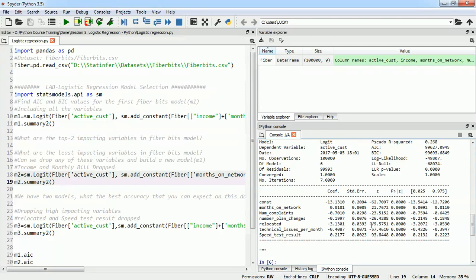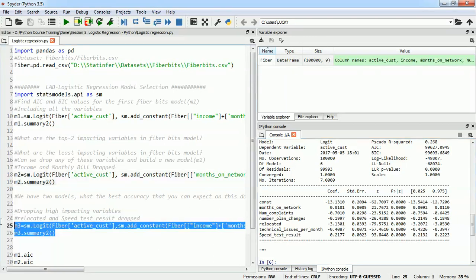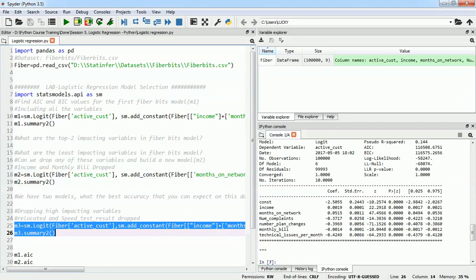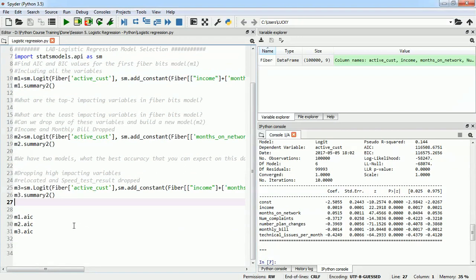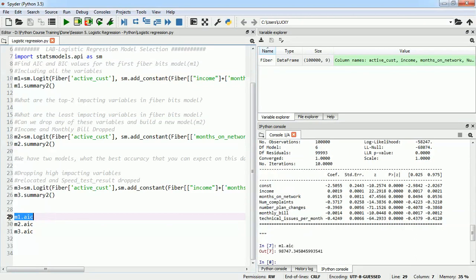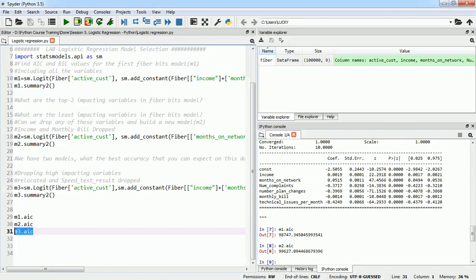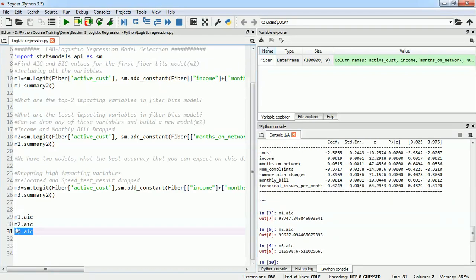We'll just play along and remove the high impacting variables from the model and build a new model, model 3. Using these three models which we have just built, we will compare the AIC values of three models. For m1, I will call the AIC values with .aic, model 2, and then model 3.